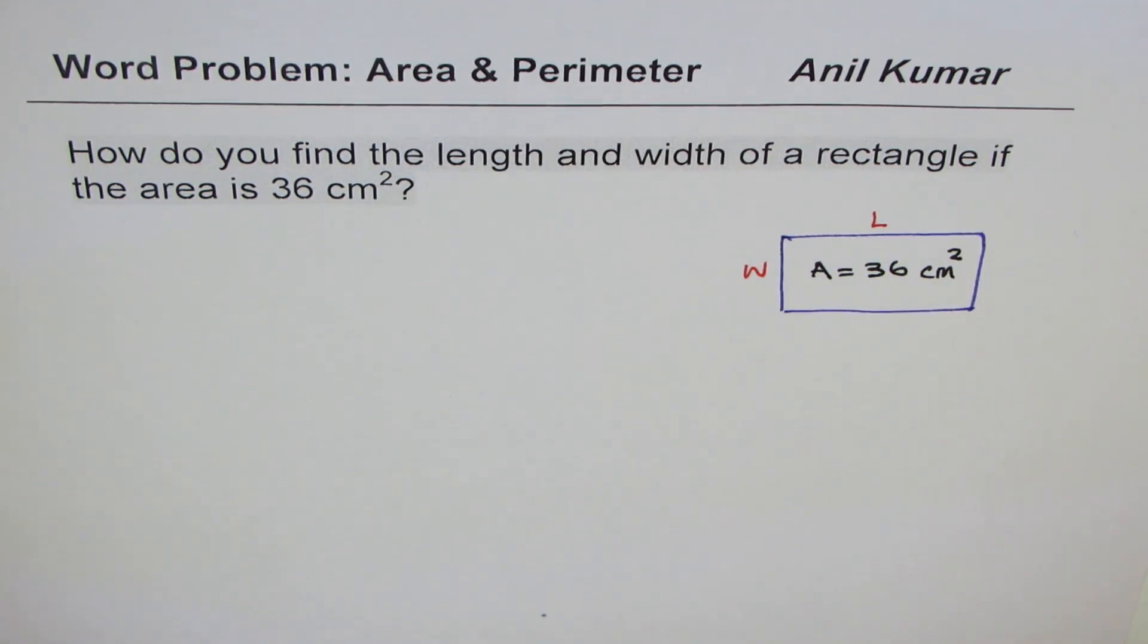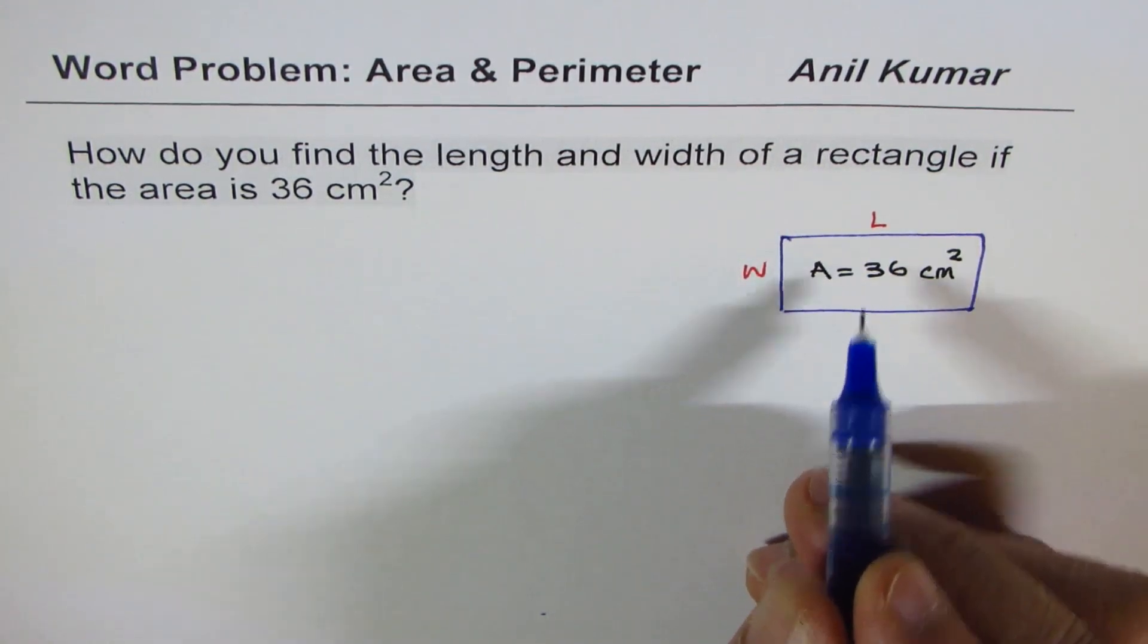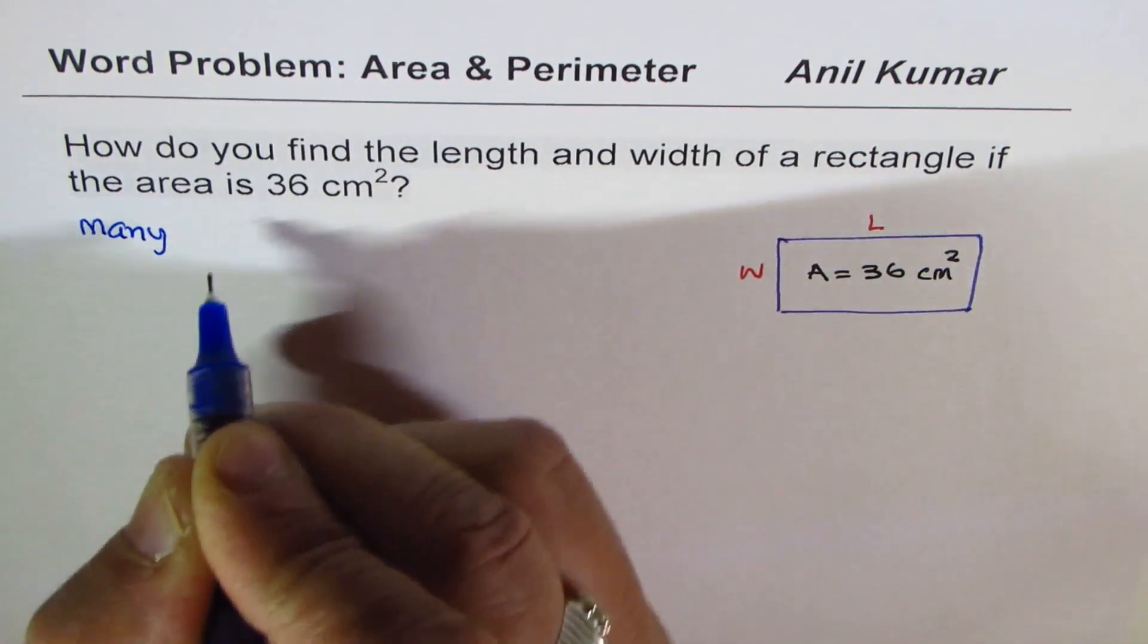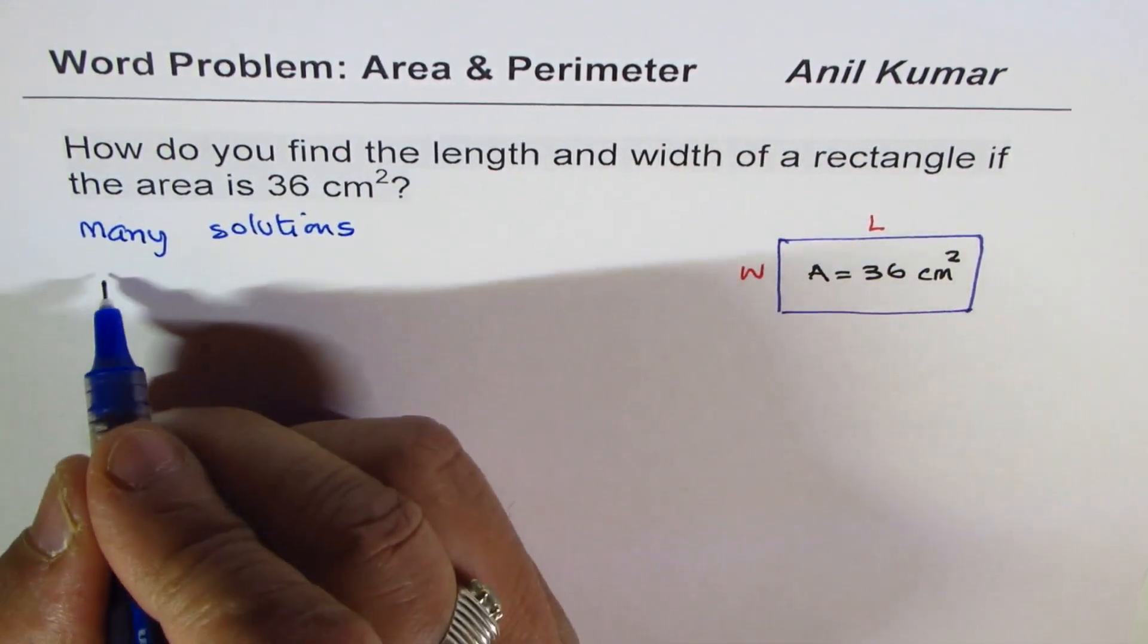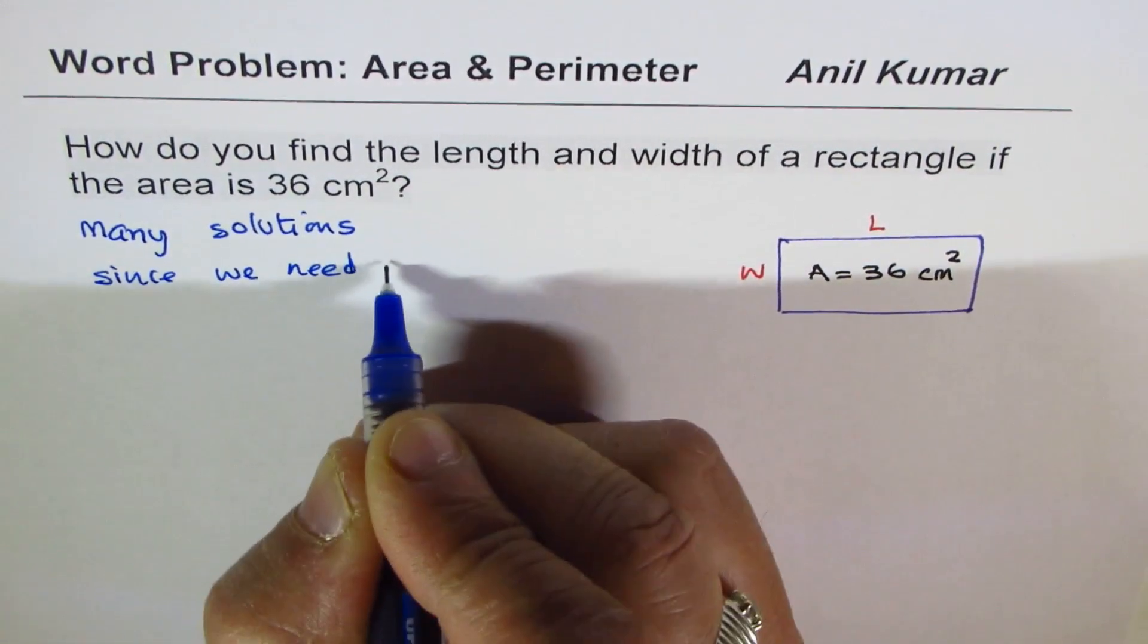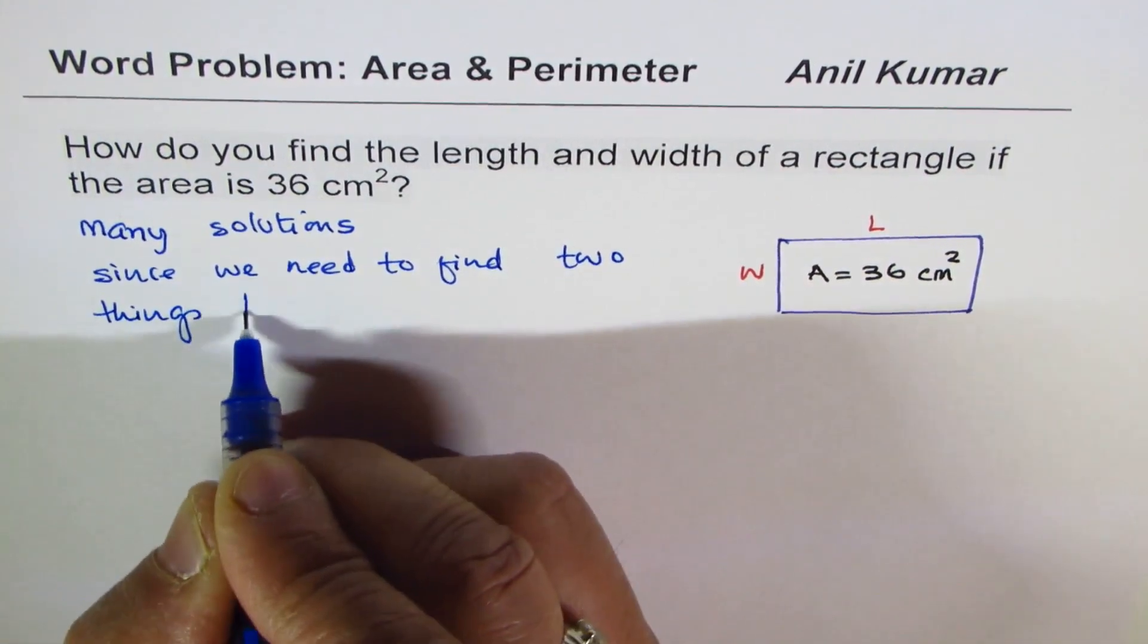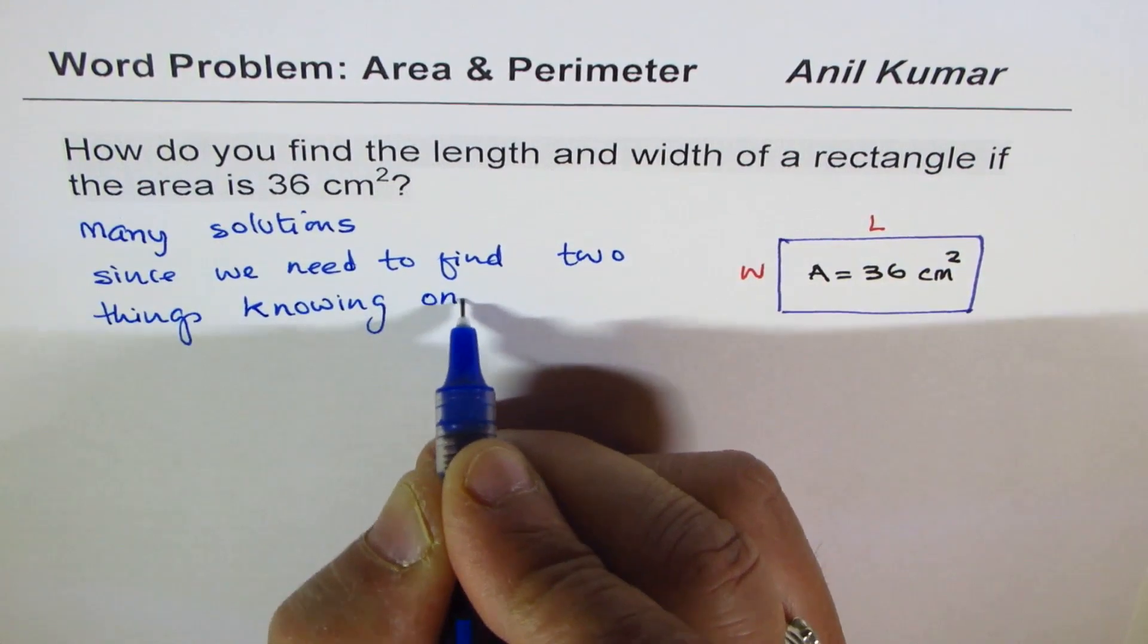Now, it is important to note that we have to find two things. We know only one thing, then we should have many solutions. So that is to say, there are many solutions since we need to find two things knowing one condition.